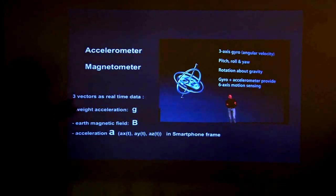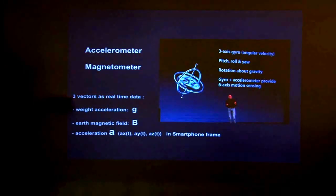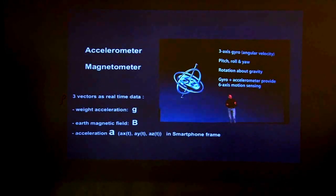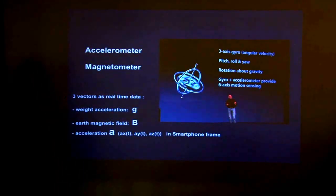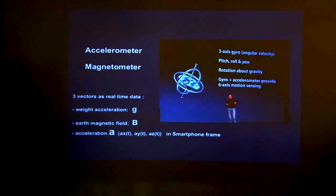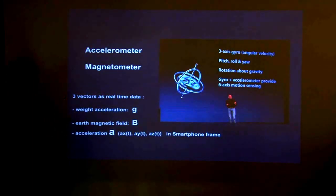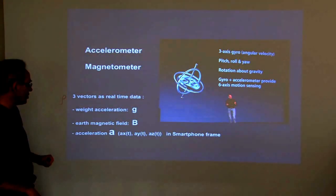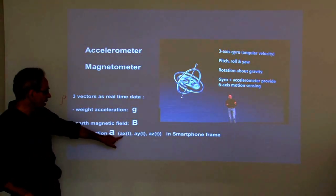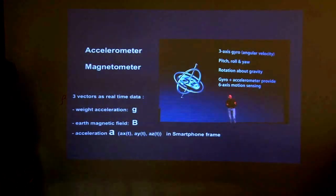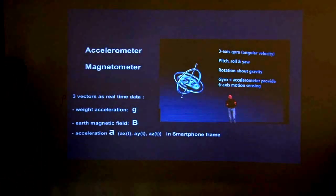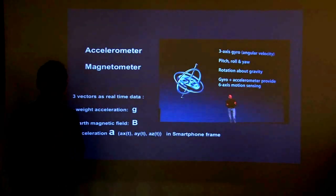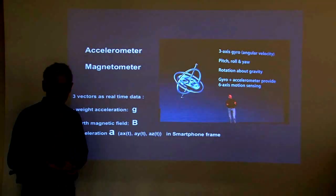And what we'll have essentially here is that we'll have three vectors that are transferred in real time. The first one is the weight acceleration. The second one is the Earth's magnetic field. And the third one, of course, is the acceleration as it's measured in the frame of the iPhone. So you get, in real time, the three components AX, AY, and AZ. And this is it.